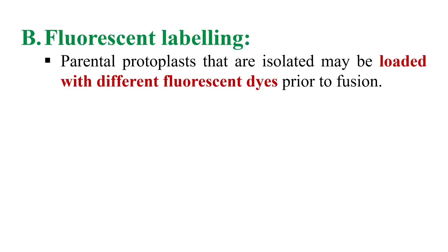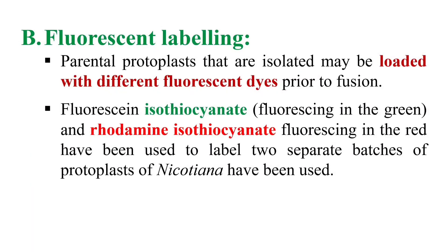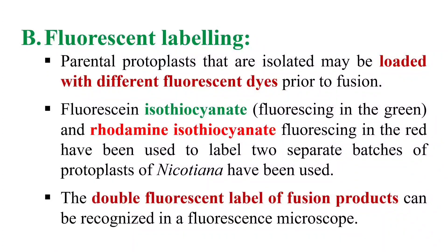Next is fluorescence labeling. If we label the parent cells with different color dyes, then in the hybrid cell both color dyes will be present. For example, if we label our protoplasts with fluorescein isothiocyanate which fluoresces green, and the other parent cell with rhodamine isothiocyanate which fluoresces red, then in the case of hybrid cells we will get both green as well as red color labels. Because hybrid cells contain the complete nuclear genome of both parents, the double fluorescence-labeled fusion products can be recognized using a fluorescence microscope.